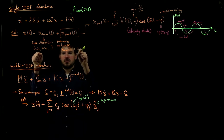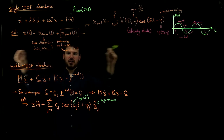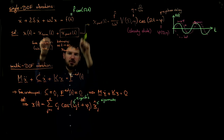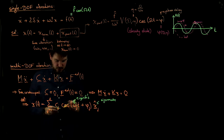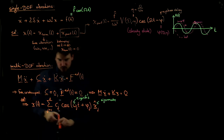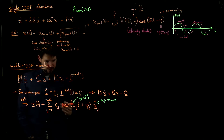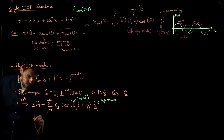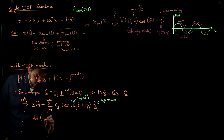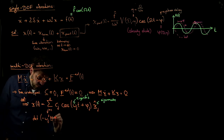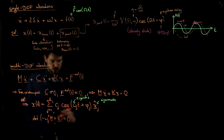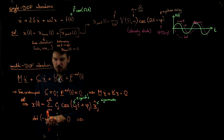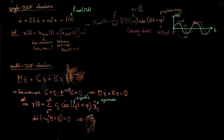To find these eigenfrequencies and eigenmodes, we plug the general solution into the governing equation to arrive at an eigenvalue problem. We solve the characteristic equation: the determinant of minus omega_j squared times M plus K equals zero. Solving this for the omega_j's yields all eigenfrequencies in the system: omega_1, omega_2, omega_3, and so on — as many solutions as we have degrees of freedom.